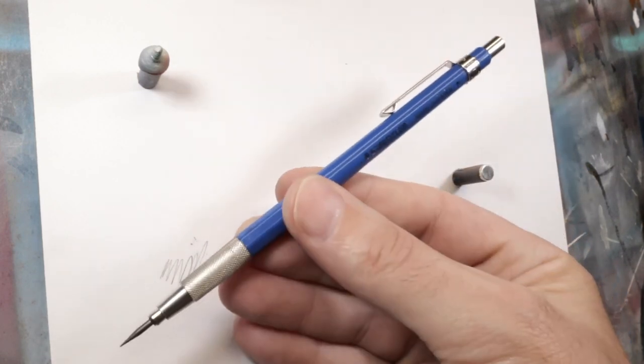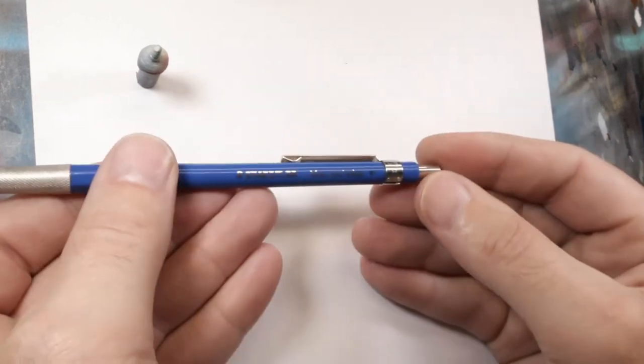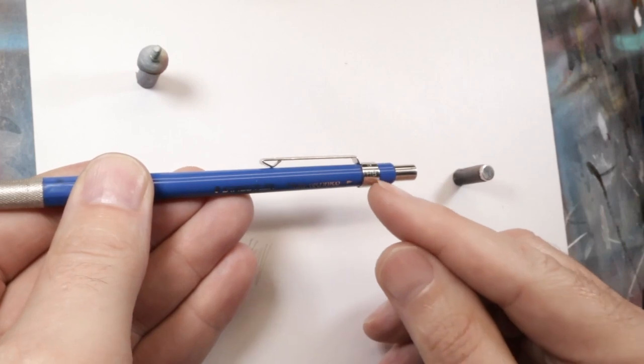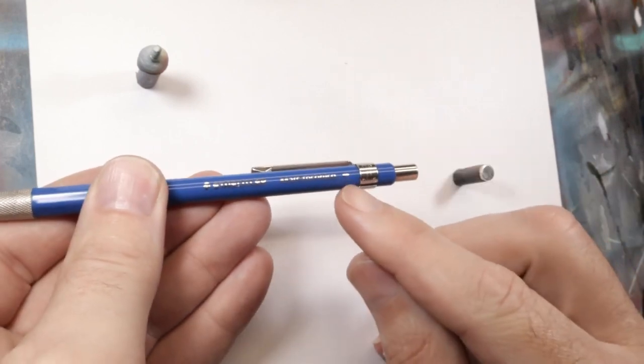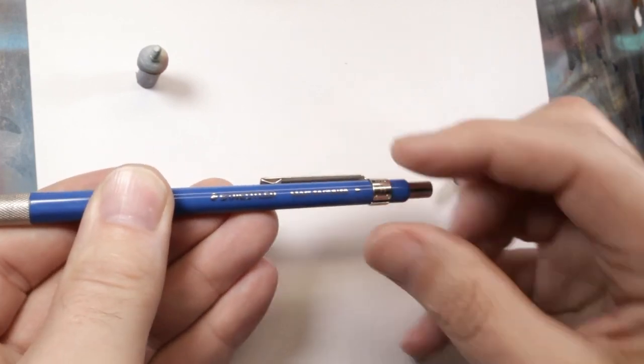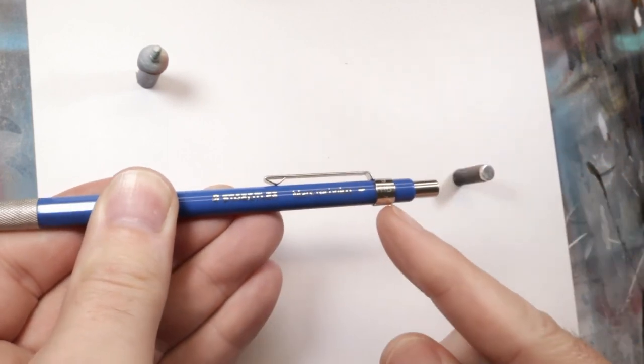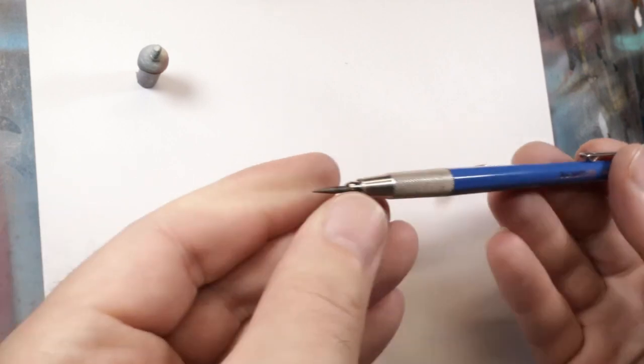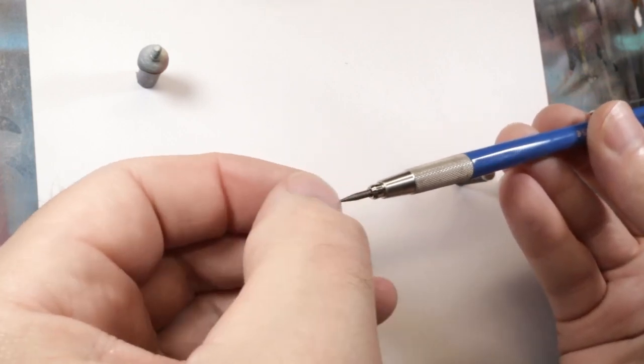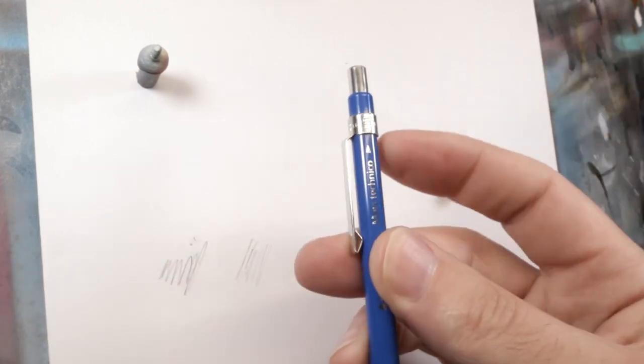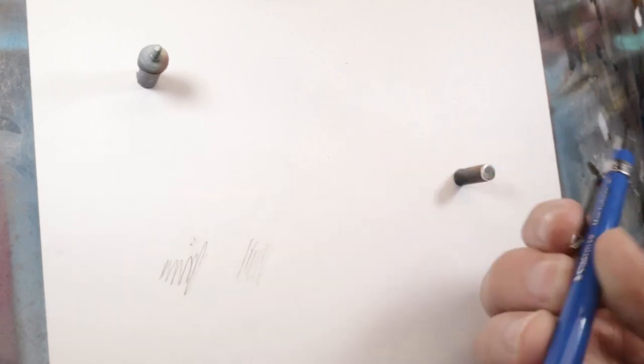So you have one pencil that does everything for you. They do have a little indicator on here, the idea is a little triangle on this one, and whatever lead is in there you kind of twist this until the lead shows so it reminds you of what's in there. Most of the leads I have, they mark the leads themselves so I rarely use that little feature, but it's kind of cool and they work great.